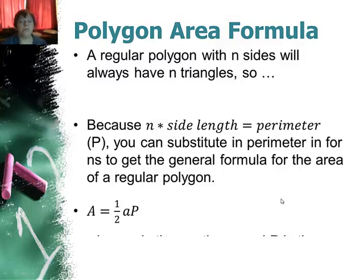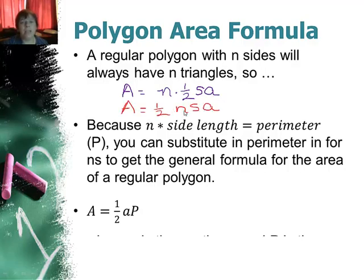A regular polygon with n sides will have n triangles. So you just go n times a half. The side is going to be the base, and the apothem is going to be the altitude. That's 1 half base times height. Let me rearrange it here. 1 half times n, the number of sides, times the side length times a.